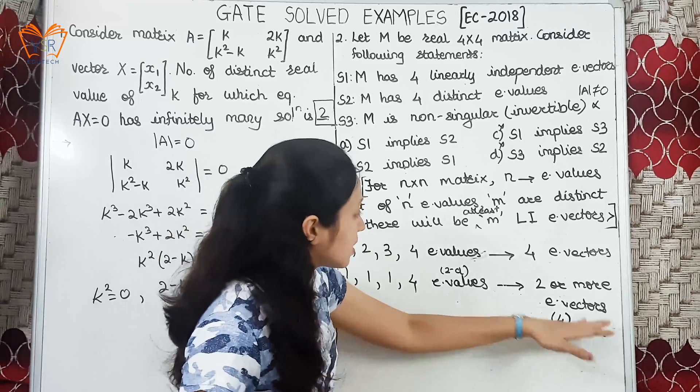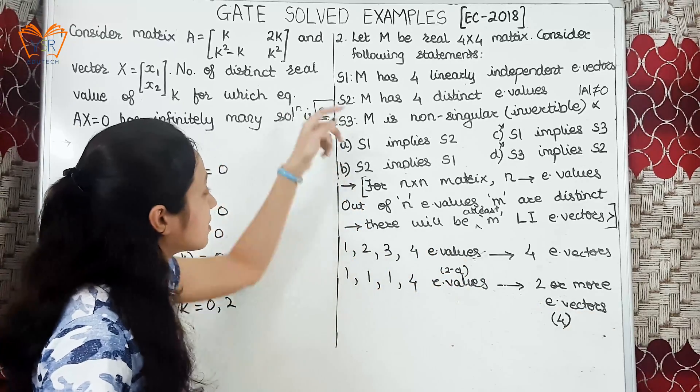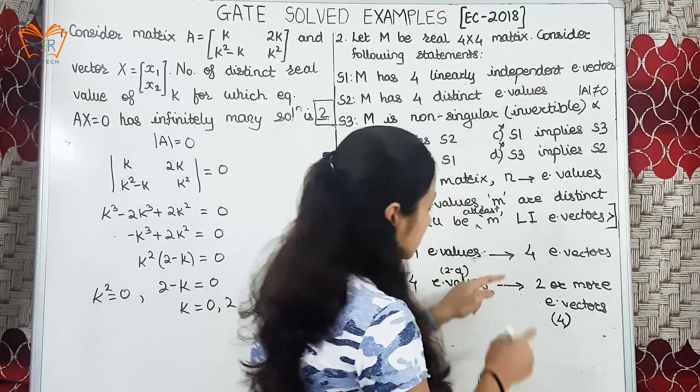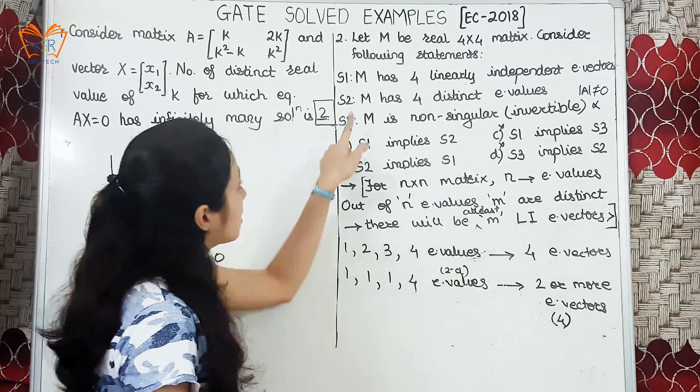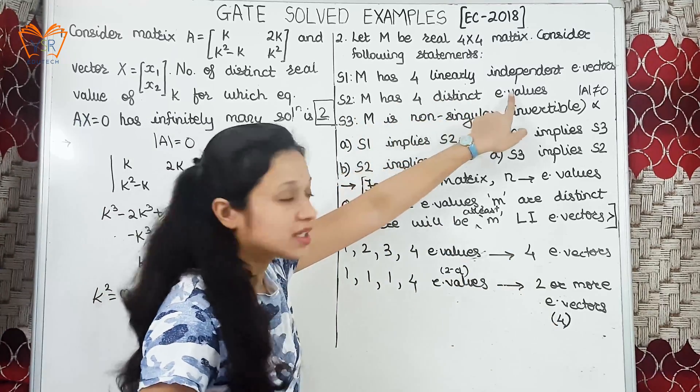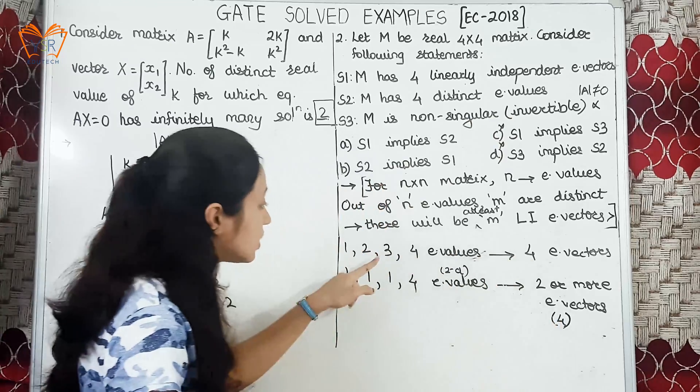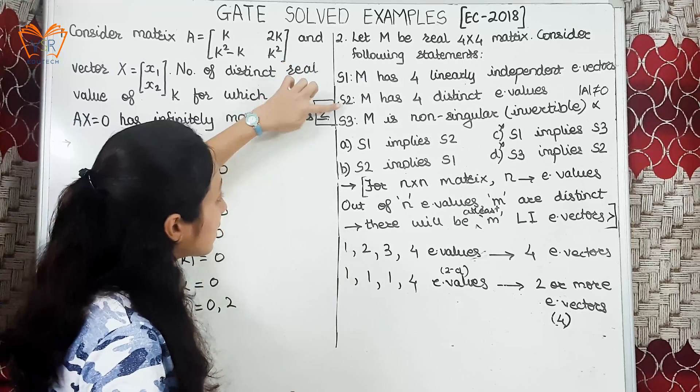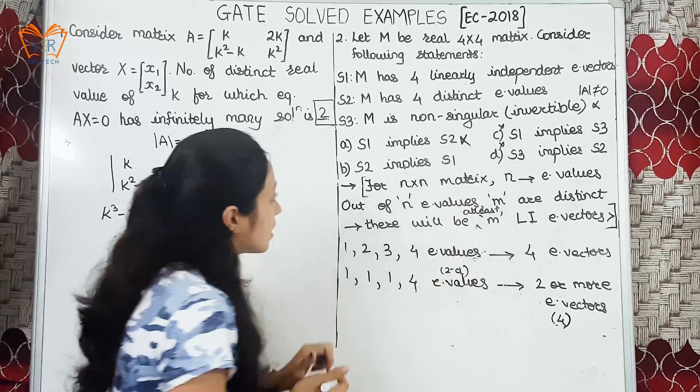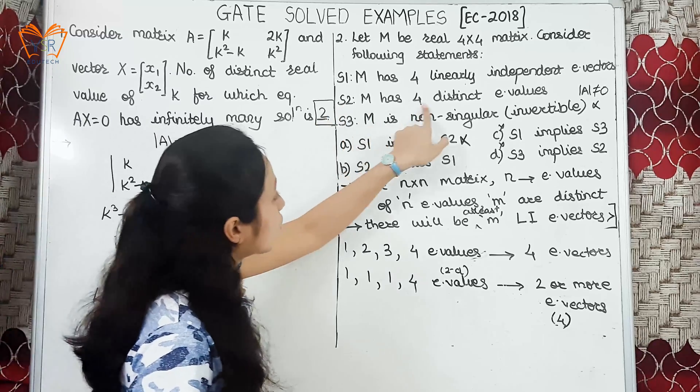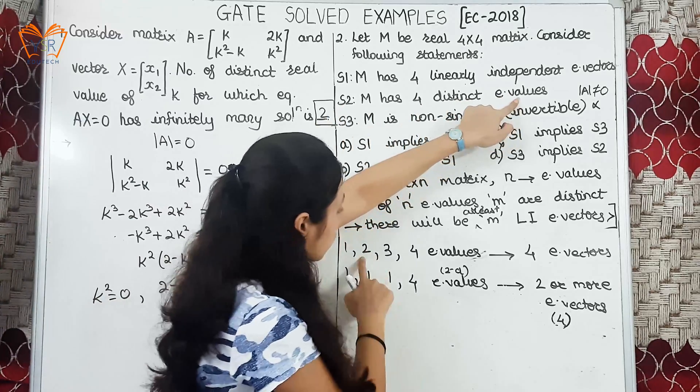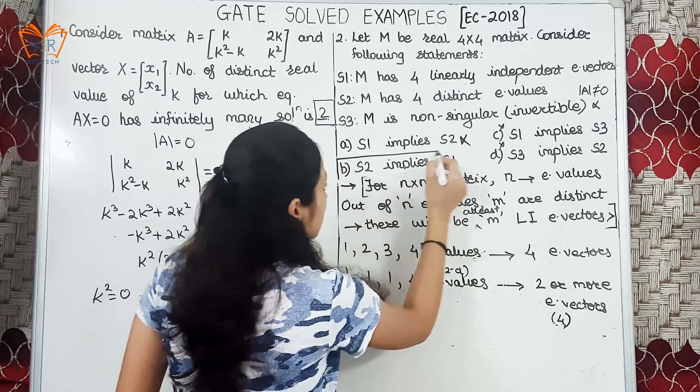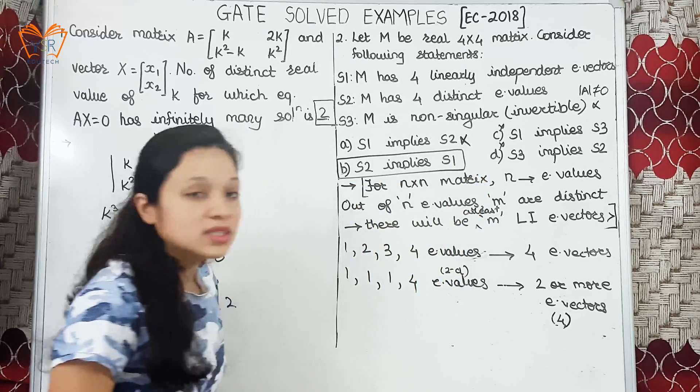Now, let us compare these two cases with the given statements. S1 says M has 4 linearly independent eigenvectors. We have 4 linearly independent eigenvectors. S2 says M has 4 distinct eigenvalues. For 4 eigenvectors we are not only getting the distinct values, we are getting repeated as well. So S1 implies S2 is wrong. But for 4 distinct eigenvalues we are getting 4 linearly independent eigenvectors. So option B that says S2 implies S1 is correct.